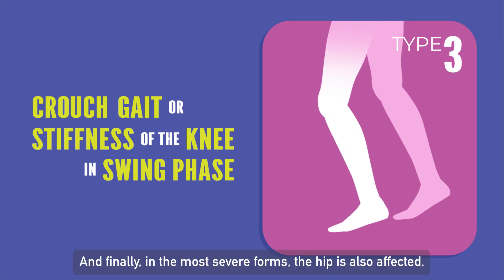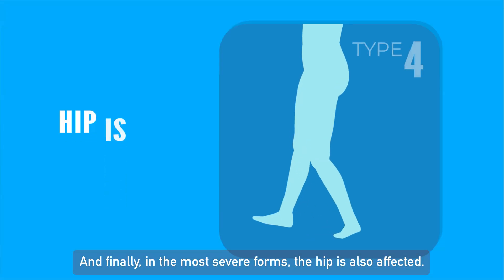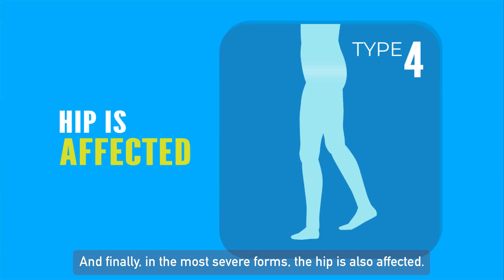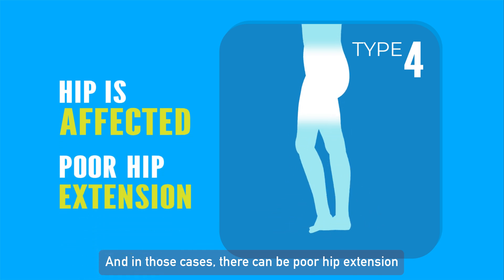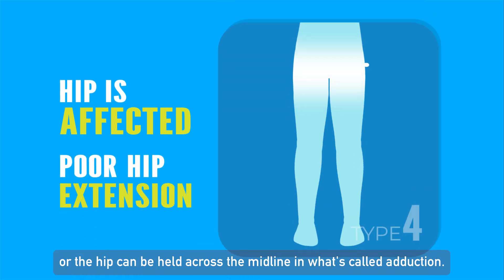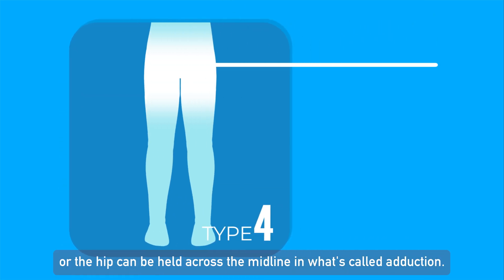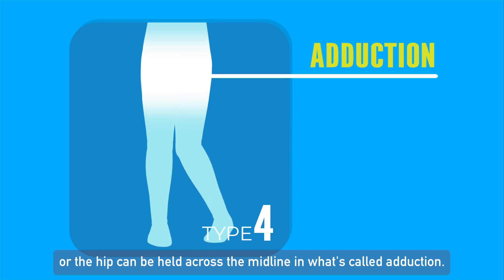And finally, in the most severe forms, the hip is also affected. In those cases, there can be excess hip extension, or the hip can be held across the midline in what's called scissoring.